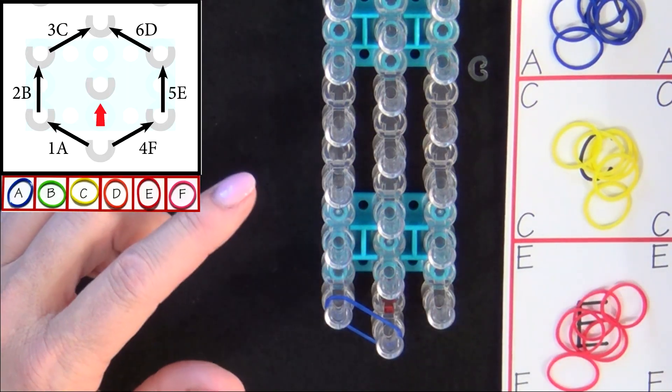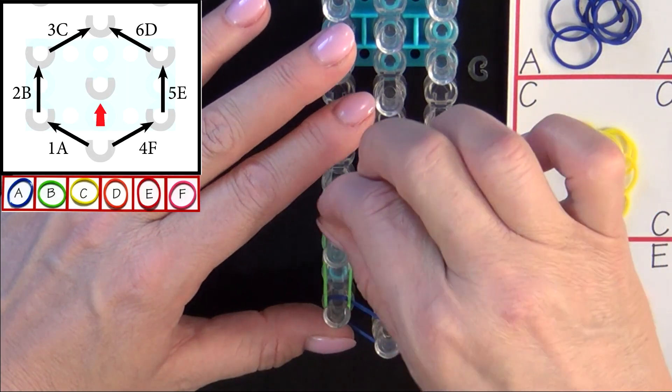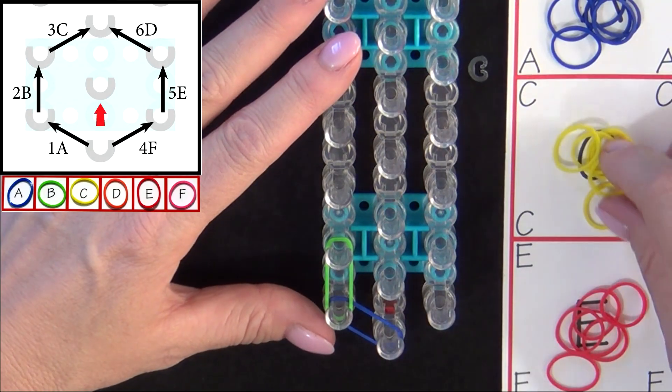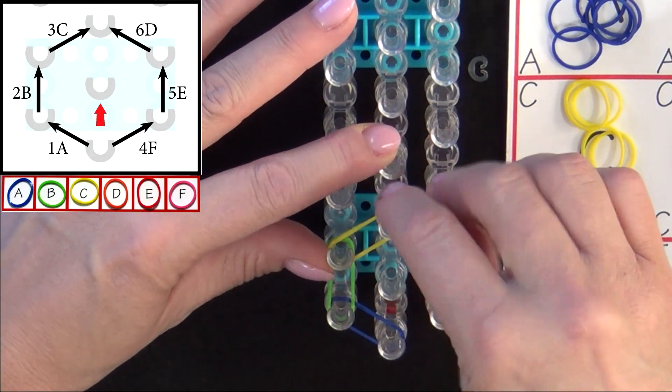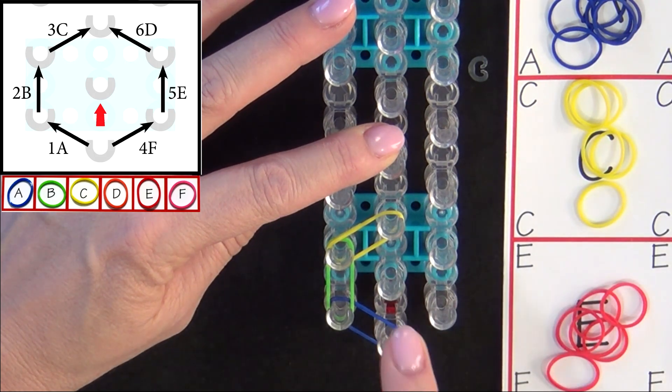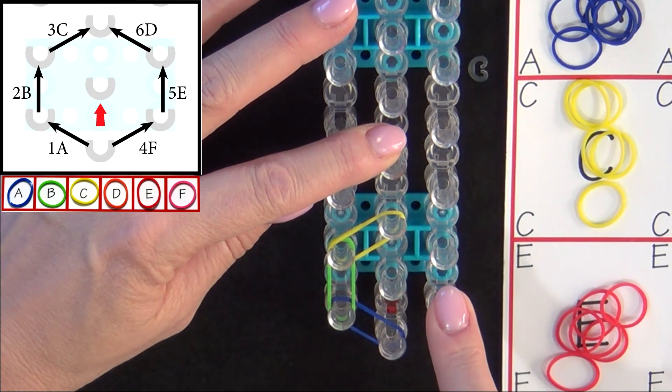Next you'll place 2B. That goes up the side of the loom. And 3C will turn into the center.